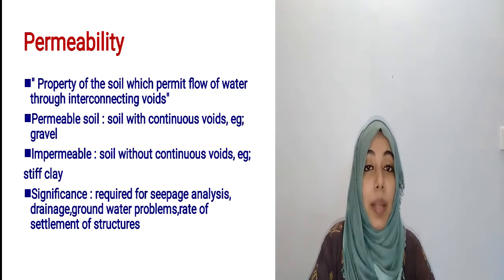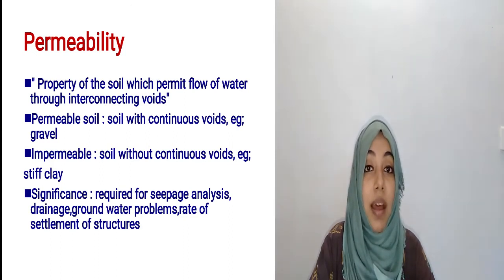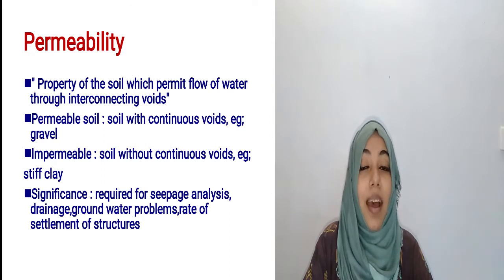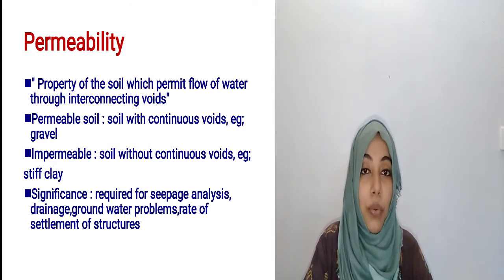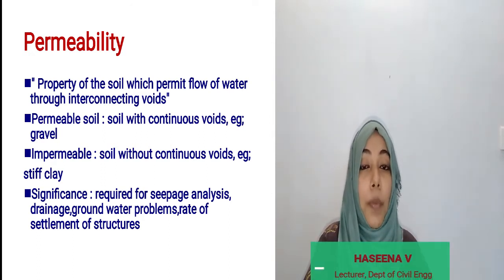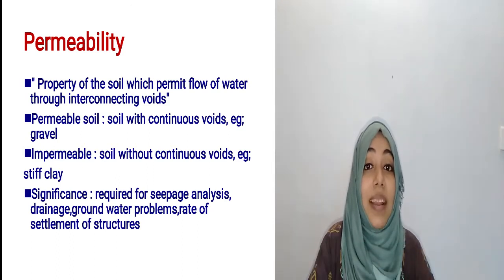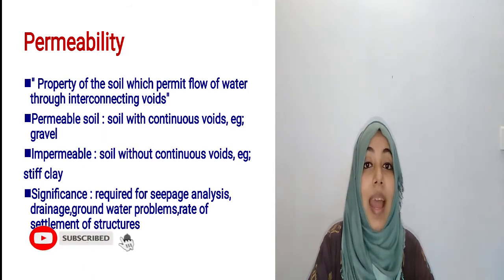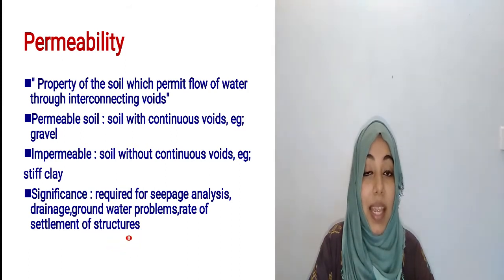The property of soil that describes the ability for water to flow through interconnected voids is called permeability. Based on permeability, we have two types of soils: permeable soils and impermeable soils. Soil with continuous voids is known as permeable soil — an example is gravel. Soil without continuous voids is known as impermeable soil — an example is stiff clay.